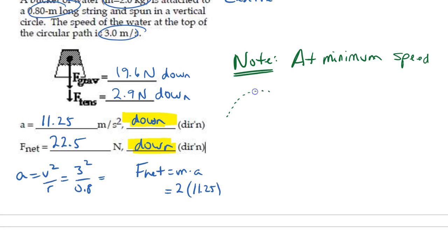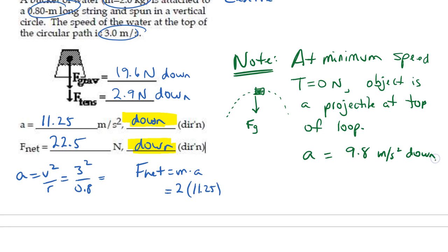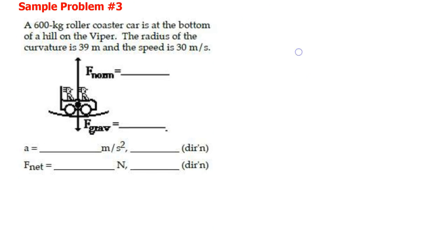Minimum speed is the speed at which you can just barely still complete the loop. At that point, tension equals zero — the object is a projectile at the top of the loop — and the acceleration equals 9.8 meters per second squared downward, which makes it straightforward to calculate the minimum speed.